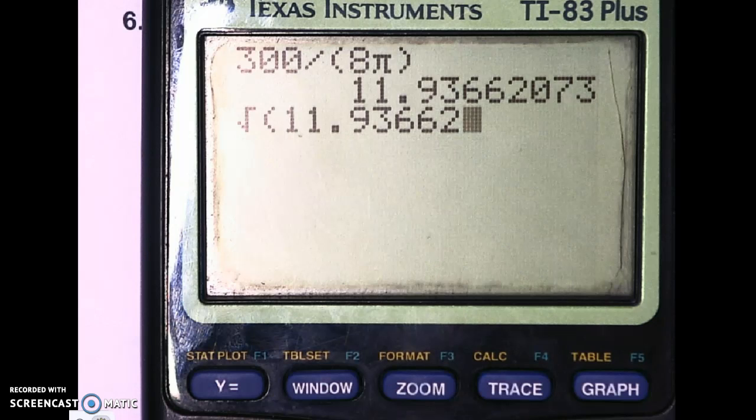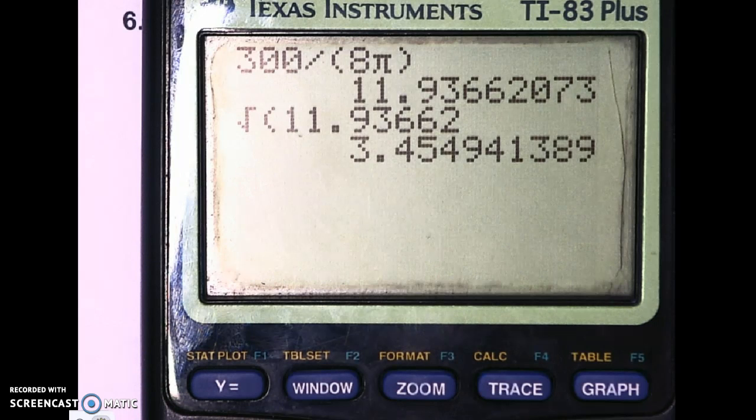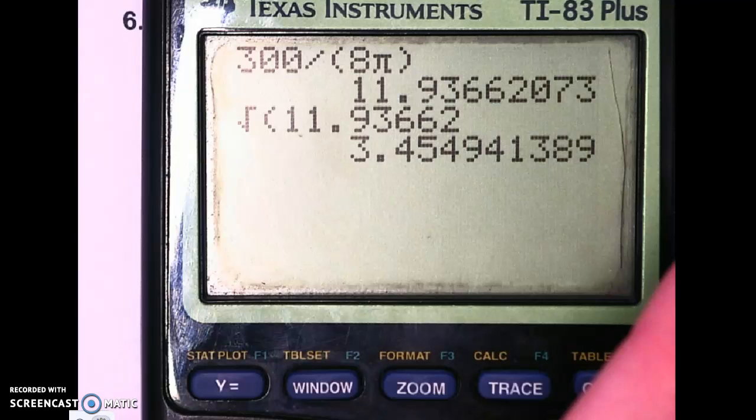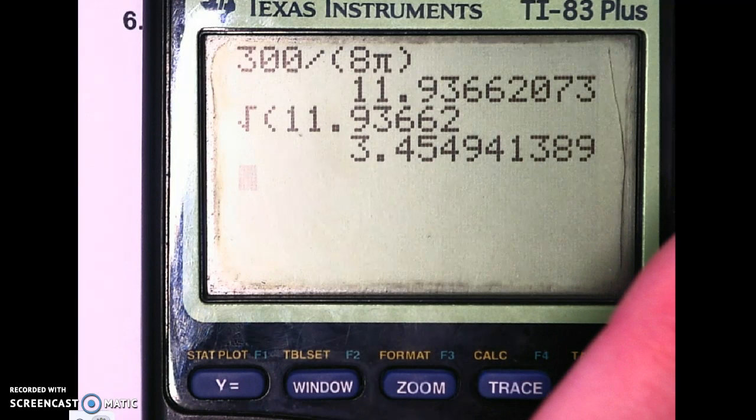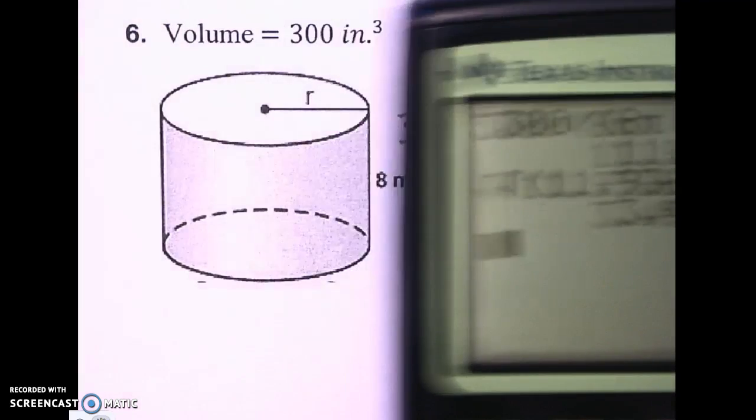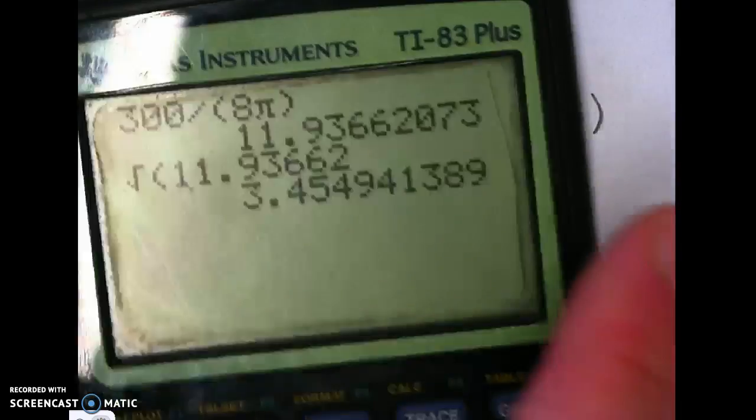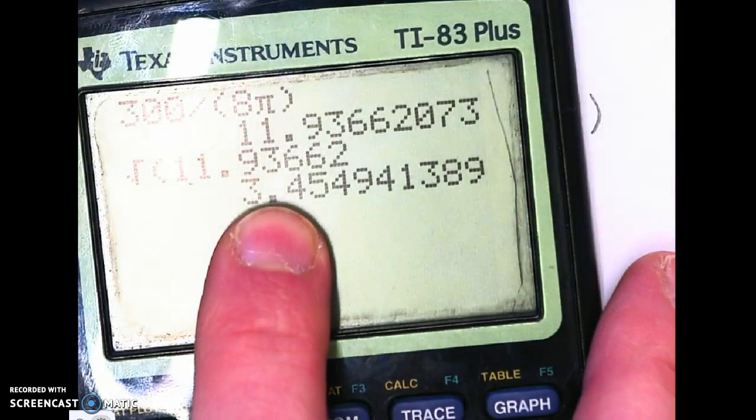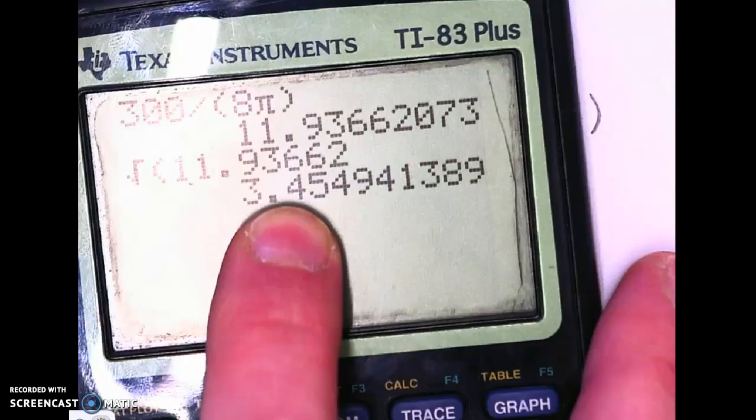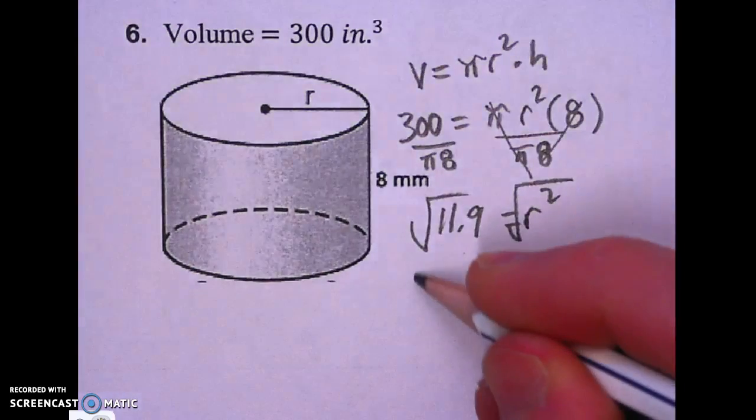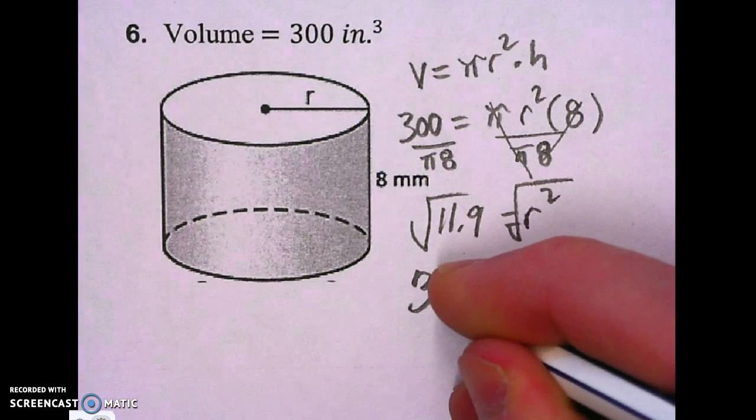Five decimals should be good. Punch it in. We get about 3.45. On this problem, it wanted us to round to the nearest whole number, so we're going to round it to 3, just barely. So it's about 3 millimeters.